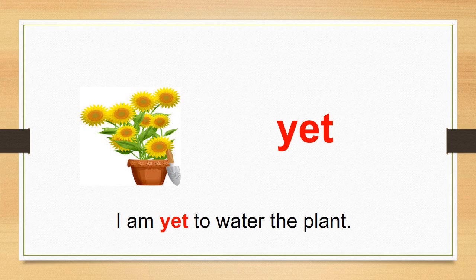The last word is yet. Generally, we use this word when we are questioning or talking about something that has not happened but that you expect to happen. For example, I have used this word in the following sentence. I am yet to water the plant. That means I have not watered the plant but I am going to water the plant.